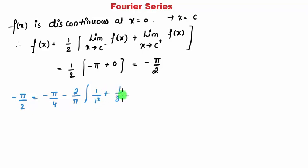square plus 1 upon 3 square plus 1 upon 5 square, and further, which finally gets to be pi square by 8. That equals 1 upon 1 square, 1 upon 3 square, 1 upon 5 square, plus further